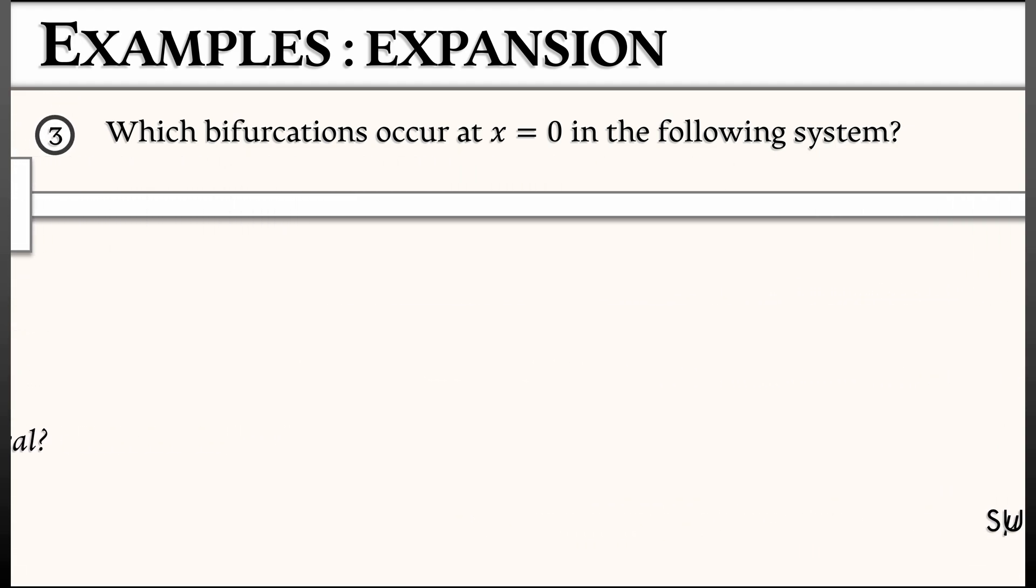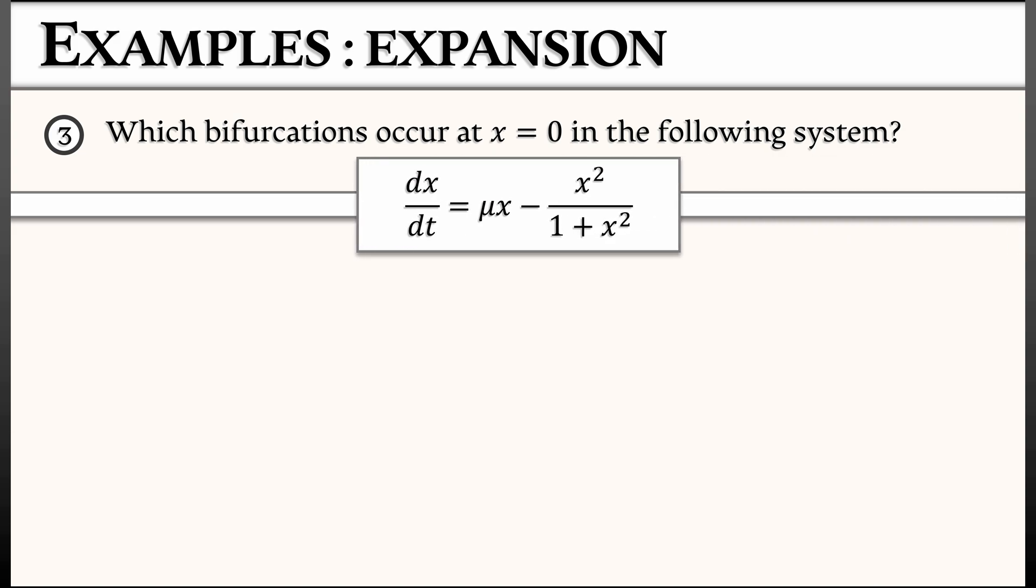Okay, last example. Let's say that dx/dt is mu times x minus x squared divided by 1 plus x squared. What do I do in this case? Well, let's see. Do I remember the Taylor expansion of this guy on the right hand side? I think what I'm going to do is factor out an x squared from the numerator of that, leaving 1 over 1 plus x squared.